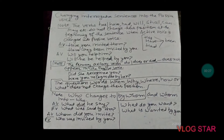Now, when changing interrogative sentences into the passive voice, the auxiliary verbs — have, has, had, will, shall, can, may, etc. — do not change their position at the beginning of the sentence when active voice is changed into passive voice.